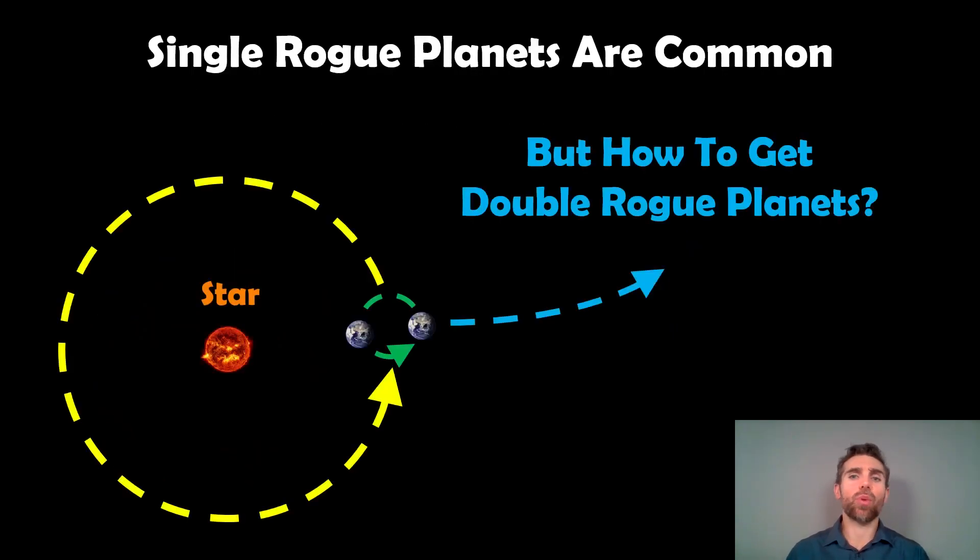But how on earth do you get the double ones? Because we know you can get a single one during a scattering event, but how do you then get a double one? And it's really not known how they've got there. They've only recently been found and there isn't a proper mechanism known to form them at the moment. Could they actually be double planets to start with that have then been thrown out, or have they formed in a different way? So it'd be interesting to see how these might have actually formed, but at the moment there's no idea how they actually got there.